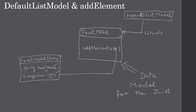This FruitModel will act as a data model for our JList, supplying the data at runtime. In the next video we will first create the FruitModelItems class and then implement our FruitModel.